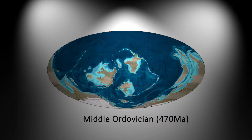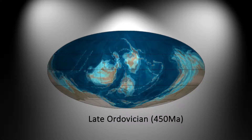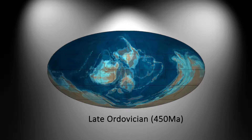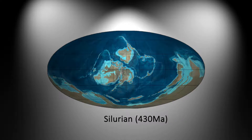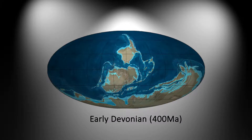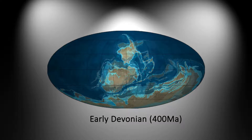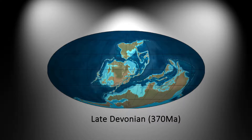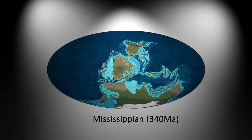Middle Ordovician, 470 million years ago. Late Ordovician, 450 million years ago. Silurian, 430 million years ago. Early Devonian, 400 million years ago. Late Devonian, 370 million years ago. Mississippian, 340 million years ago.